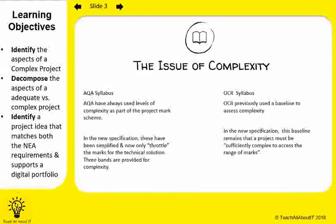AQA has three levels of complexity that you need to meet. OCR has changed that — it has to be sufficiently complex to access the range of marks available to you. So your marks are not throttled depending on how complex your project is as they would be with AQA. However, you do have to have a higher baseline for your project complexity. So in both cases, you want to aim for a highly complex project.